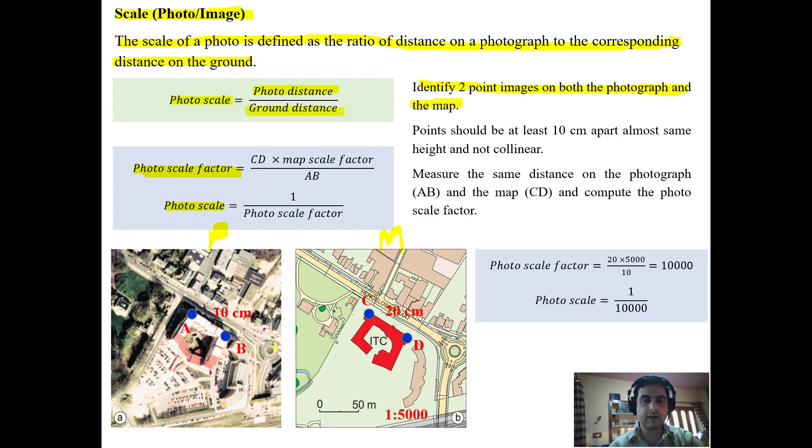Both the photograph and map belong to the same area. We have identified the two corners of a building, namely A and B, and the same points have been identified as C and D on the map. The distance between the two points is measured and should be at least 10 centimeters.